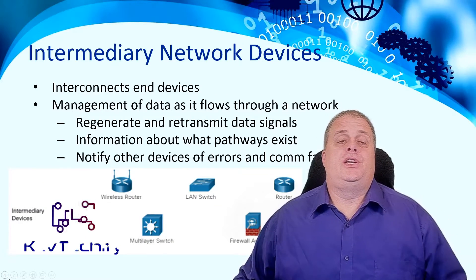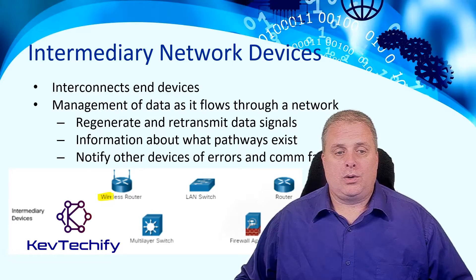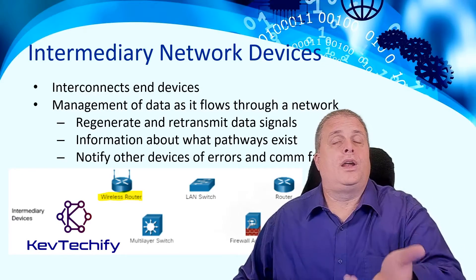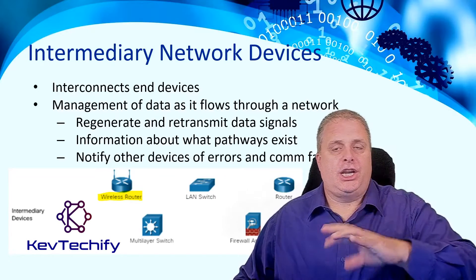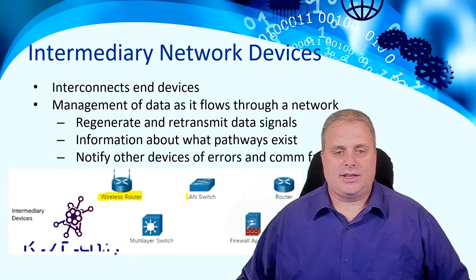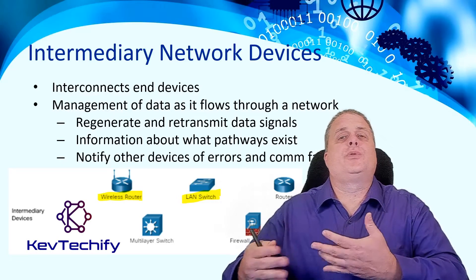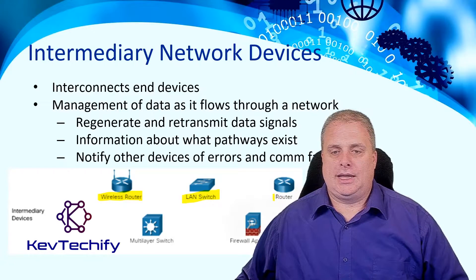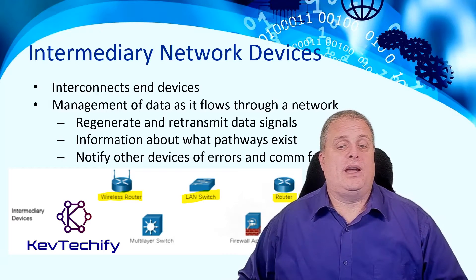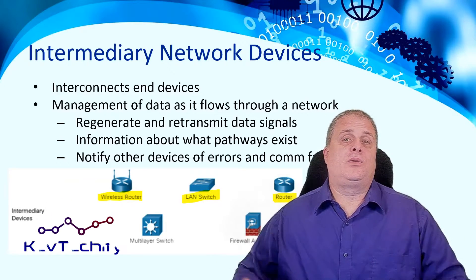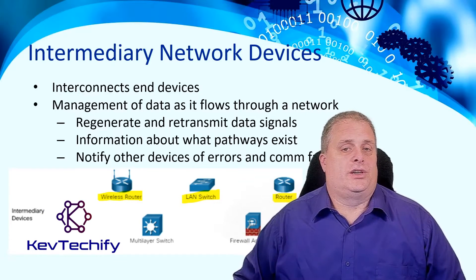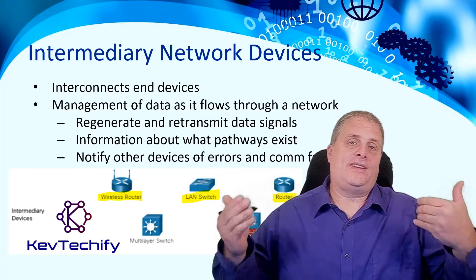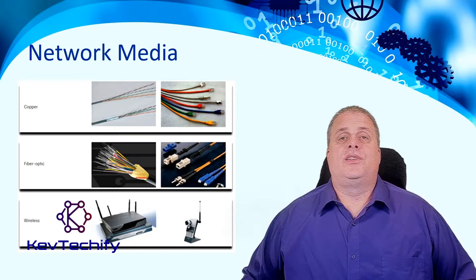We have some examples of intermediary devices. We have a wireless router, which typically takes data from a wired copper Ethernet connection and changes it into a wireless connection. A LAN switch connects multiple devices on your LAN to allow them to communicate in the general vicinity. We also have a router — the key thing to remember about a router is that it routes between networks. Intermediary devices pass data through, while end devices are where data starts and stops.